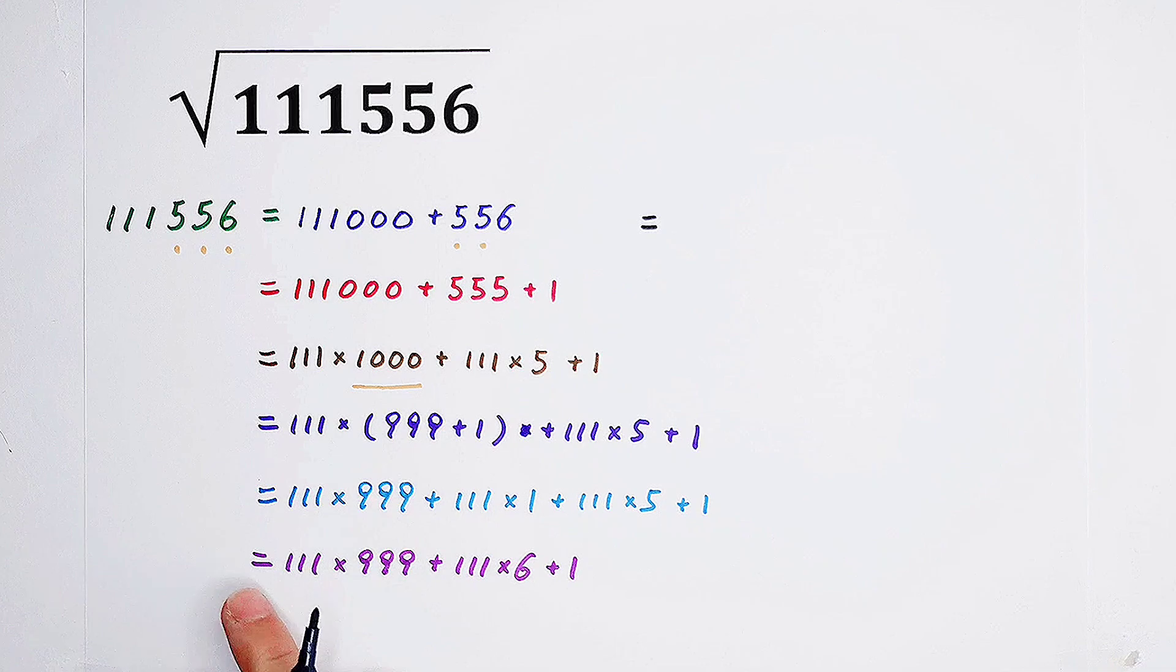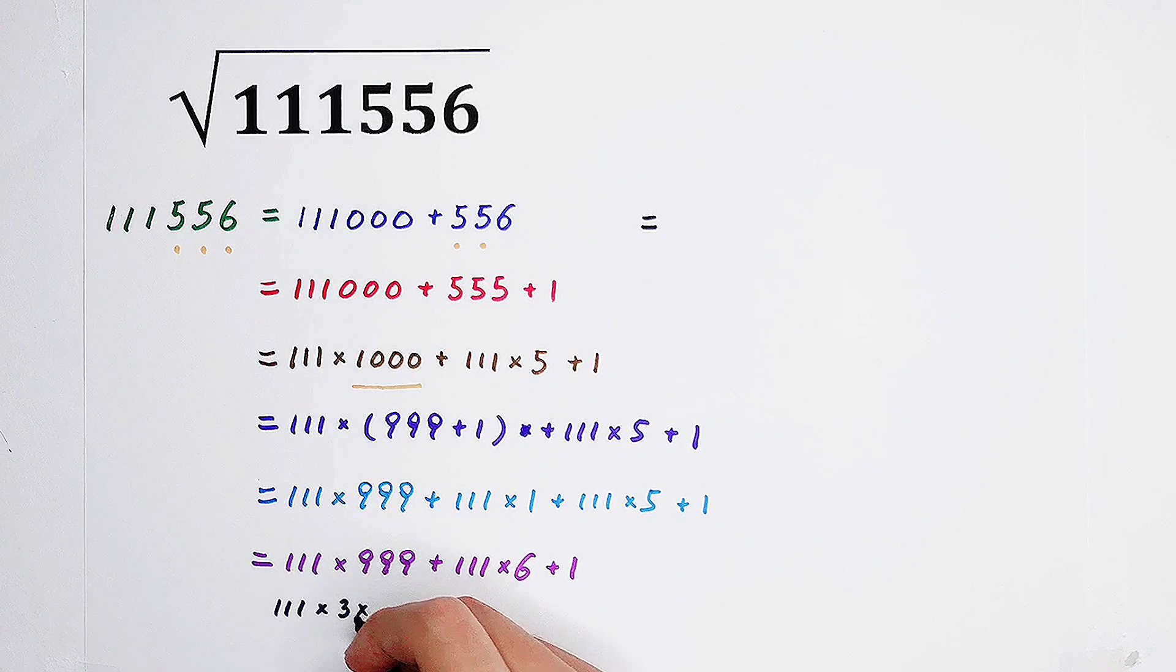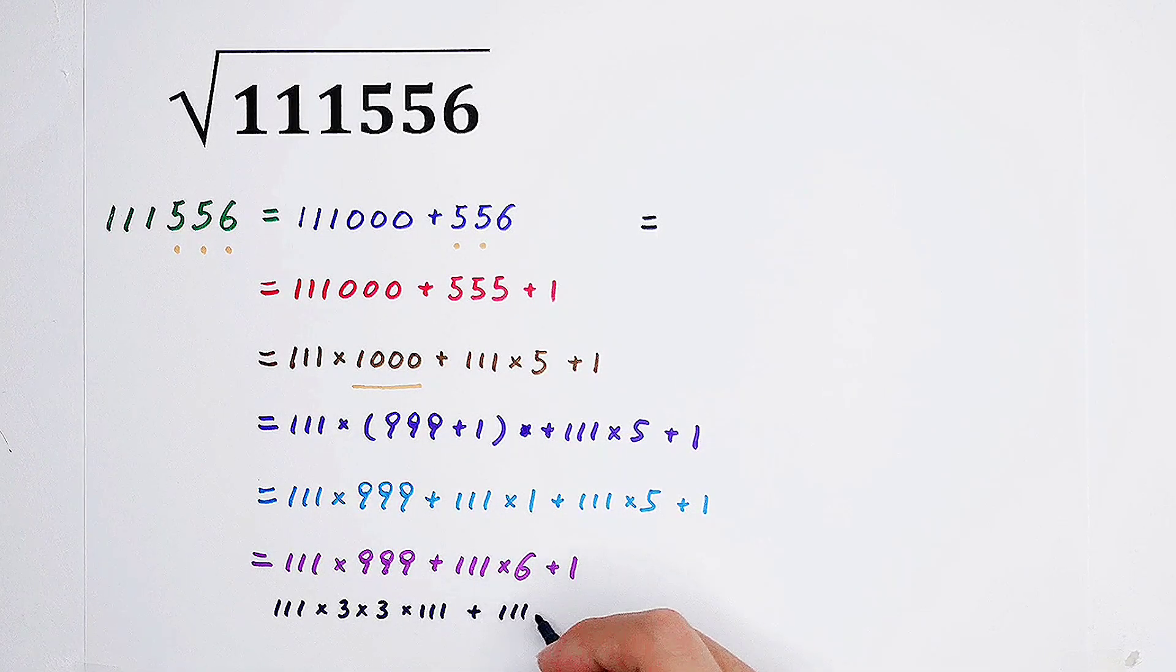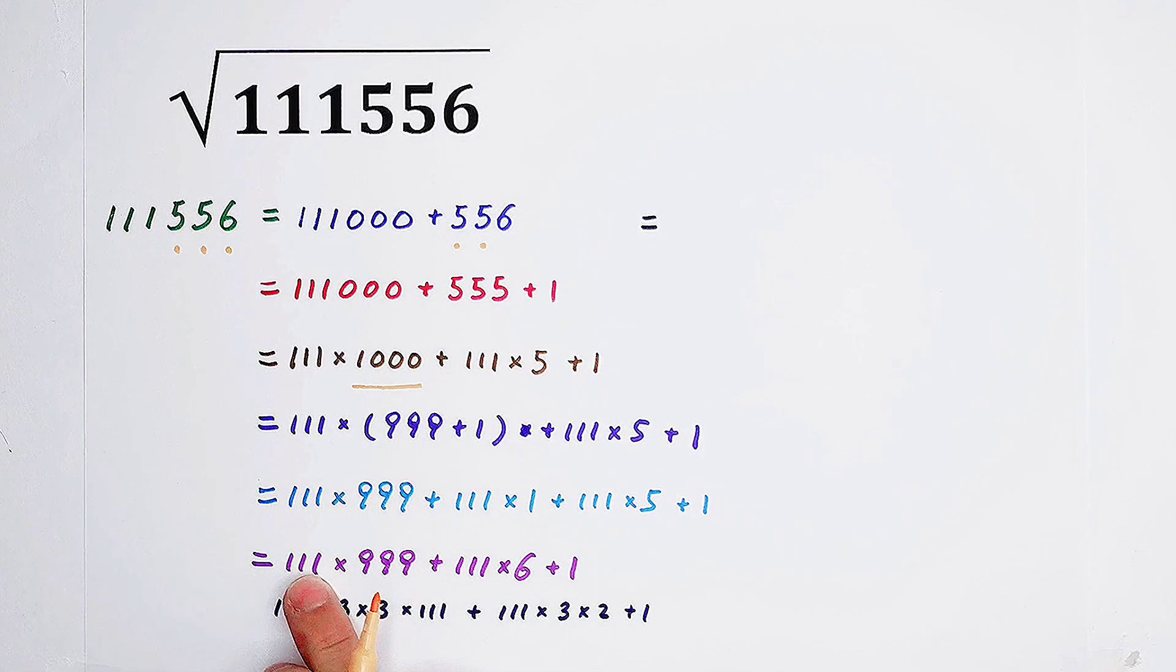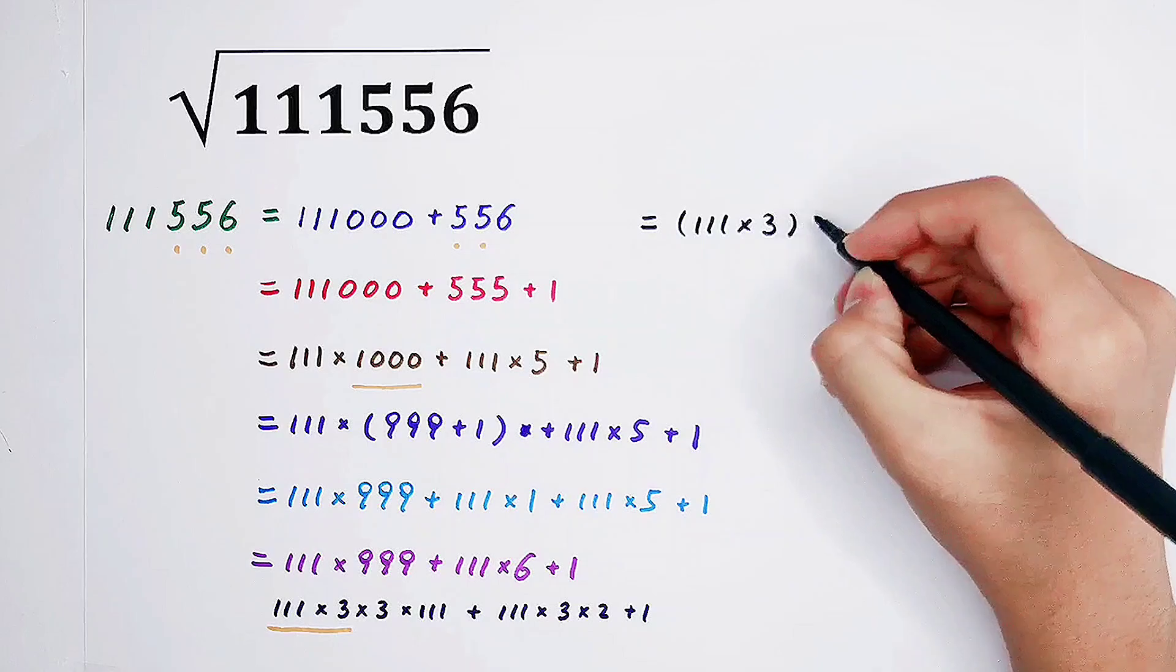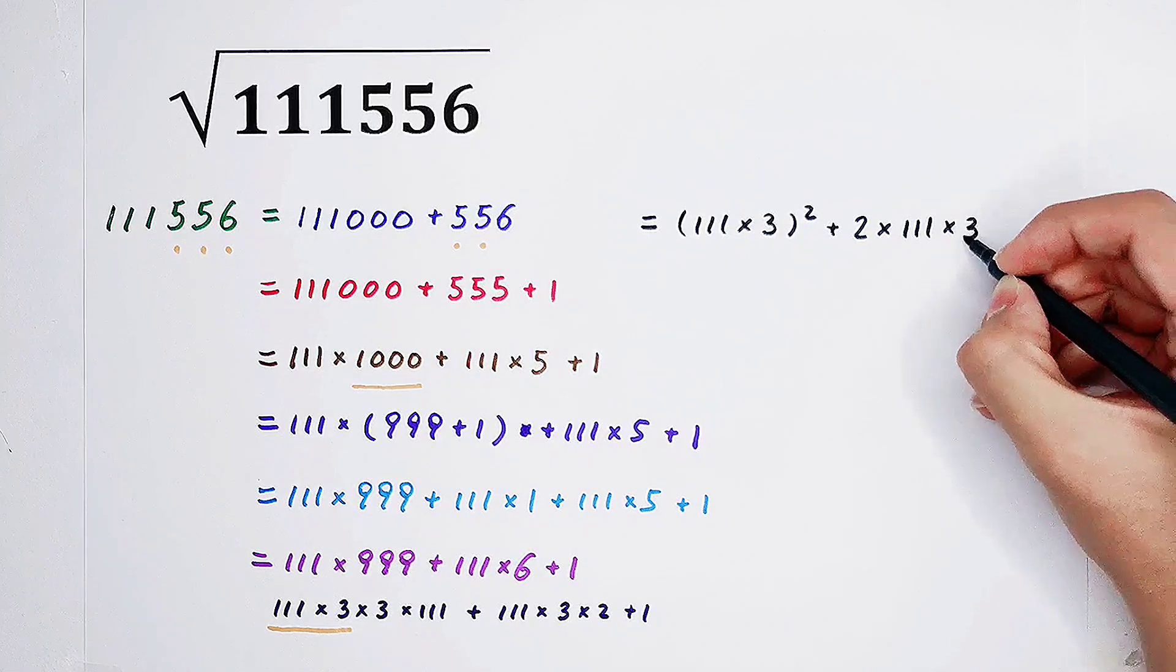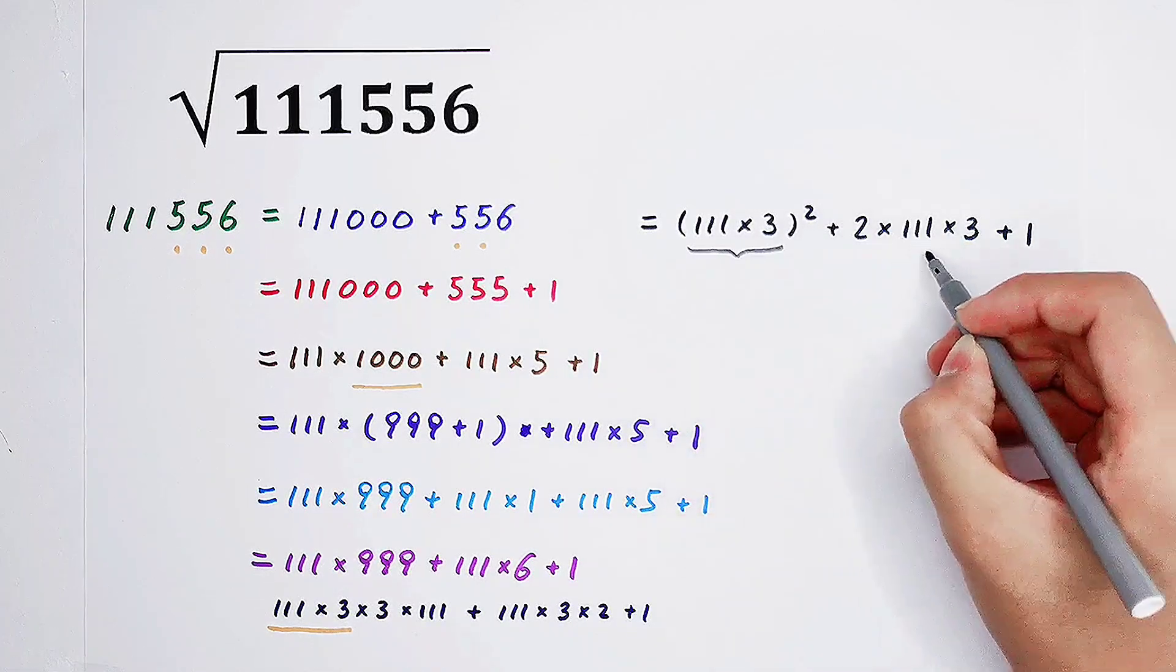So next. Look. 111, then times 999. This 999 can be written as 3 times 3, then times 111. And this 6, it can be written as 3 times 2. So now, 111, then times 999, it is equal to 111 times 3, or squared. So here is 111 times 3, or squared, and then plus 2 times 111 times 3, and then plus 1.